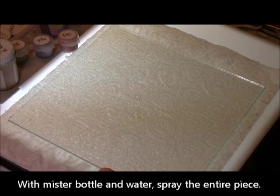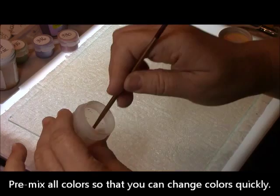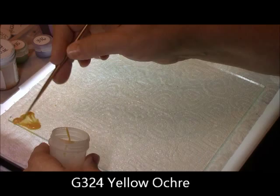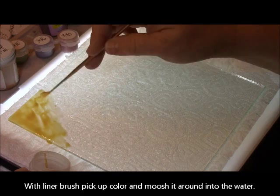Pre-mix all your colors. I'm going to start out with 324 and it is yellow ochre and I've pre-mixed it to a melted ice cream or a honey type consistency. You want to work fairly quickly when you start this and I'm just grabbing some of the yellow and adding it to the water that's on there and kind of mushing it around and letting it blend in.